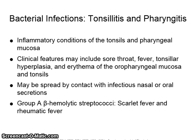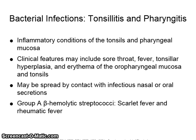Tonsillitis and pharyngitis are inflammatory conditions of the tonsils and pharyngeal mucosa. Clinical features may include sore throat, fever, tonsillar hyperplasia, and erythema of the oropharyngeal mucosa and tonsils. It may be spread by contact with infectious nasal or oral secretions. It is caused by Group A beta-hemolytic streptococci, which also cause scarlet fever and rheumatic fever.